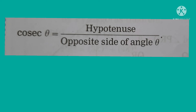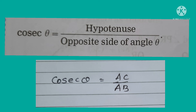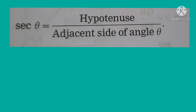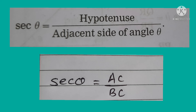The next trigonometric ratio, cosecant theta, can be written as hypotenuse upon opposite side of angle theta. In short, cosec theta equals hypotenuse upon opposite side, symbolically written as cosec theta equals AC upon AB. Next, sec theta can be written as hypotenuse upon adjacent side of angle theta. Symbolically, sec theta equals AC upon BC.